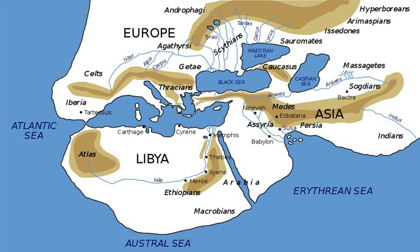Hecataeus of Miletus, c. 500 BC, is also said to have written a book about Ethiopia, but his writing is now known only through quotations from later authors. He stated that Ethiopia was located to the east of the Nile, as far as the Red Sea and Indian Ocean. He is also quoted as relating a myth that the sciapods, or 'shade-feet,' lived there, whose feet were supposedly large enough to serve as shade.